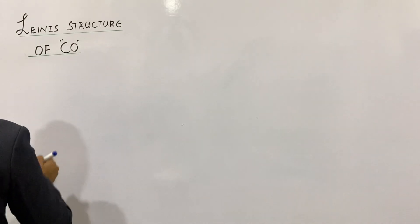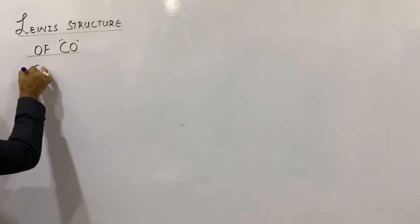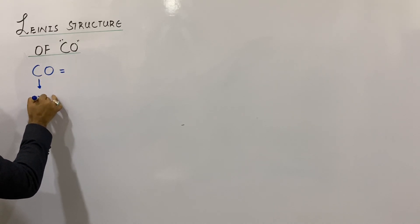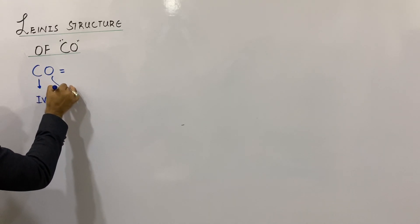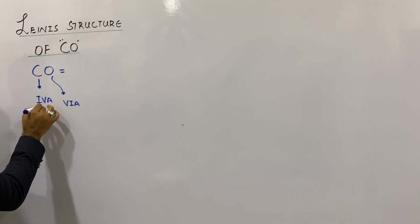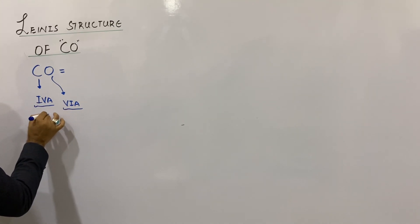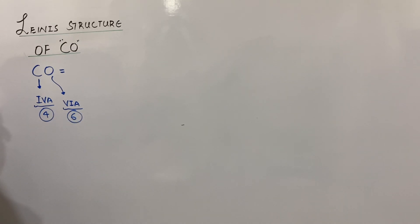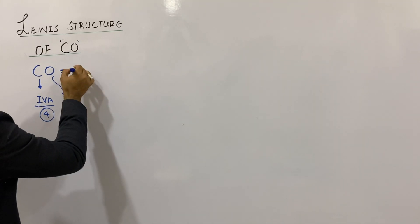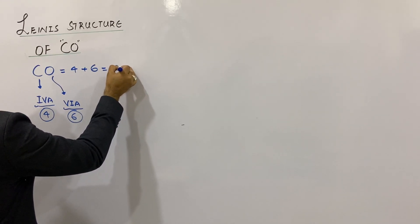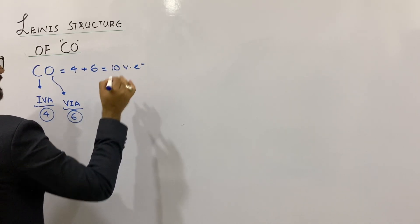The first step will be to calculate the total number of valence electrons. Carbon is a member of group 4A and oxygen is a member of group 6A. So one carbon should have four electrons in its valence shell and oxygen should have six electrons in its valence shell, and four plus six gives a total of ten valence electrons.